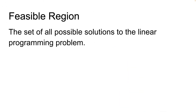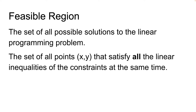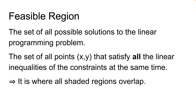The feasible region is the set of all possible solutions to a linear programming problem. Essentially, it's the set of all points that satisfy all of the linear inequalities of the constraints at the same time. Graphically, it's where all of the shaded regions overlap.